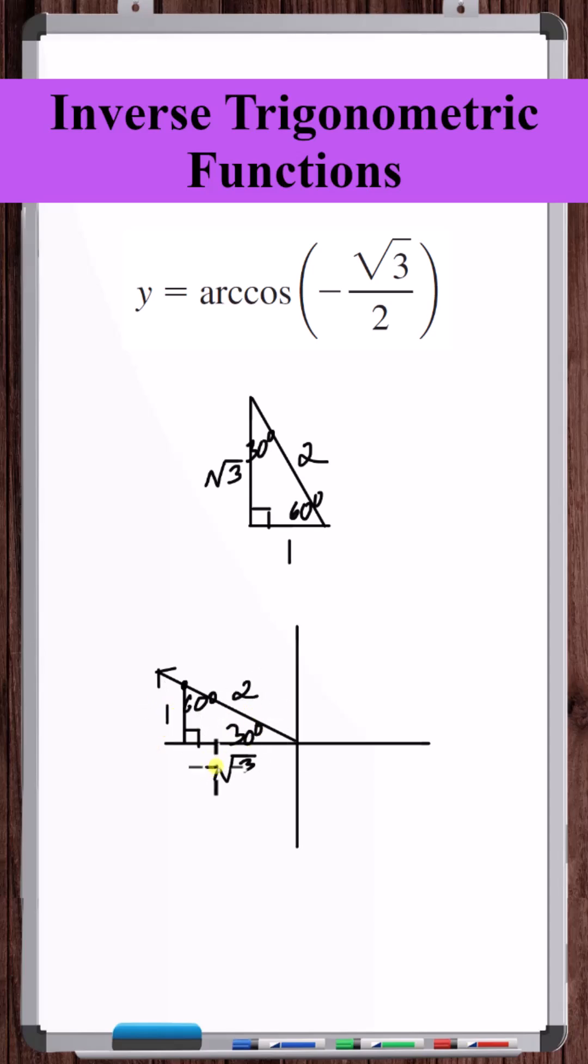Cosine of the reference angle is minus root 3 over 2. And this angle, we can see, is 150 degrees. So this is equal to 150 degrees.